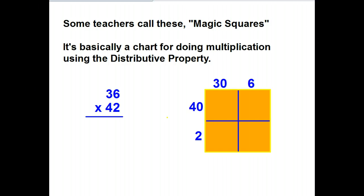One of these has been called magic squares. It's basically a chart for doing multiplication using the distributive property. So if I were to get a problem that looked like this, I would build a chart that looks like this. Because it's a two digit times two digit problem, I would need four squares.